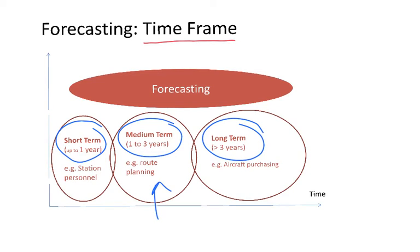When we look at medium term, it's one, two, three years. And it's the example we just mentioned. It's to forecast number of passengers to launch a route. So what is called route planning.